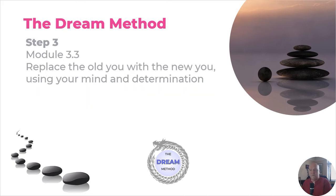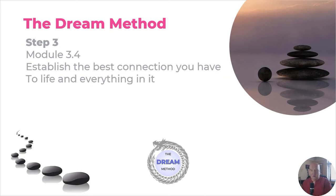Module 3.3 is about replacing the old you with the new you, using your mind and determination. Your determination comes from your solar plexus — the third chakra — which is your sense of self and willpower. You're using your mind with your third chakra to bring you the determination you need to move into the place you want to be. Module 3.4 is about establishing the best connection you have to life and everything in it. When everything feels foggy, overwhelming, or numb, this module helps you find clarity and that best connection.